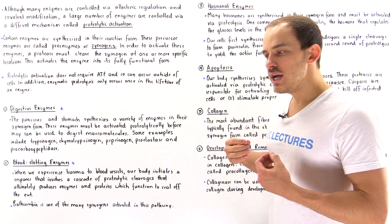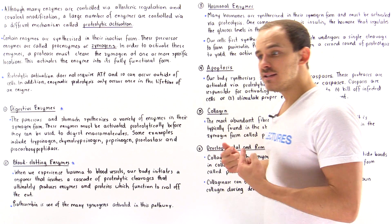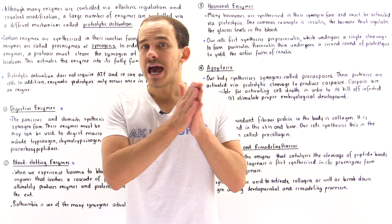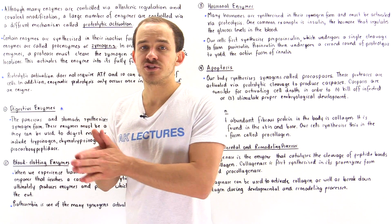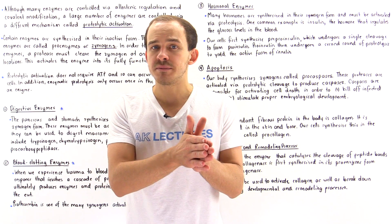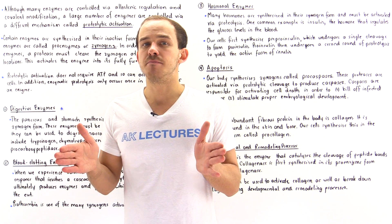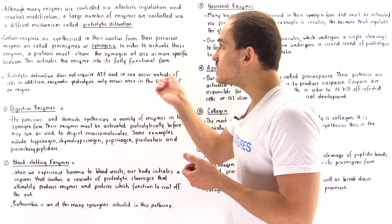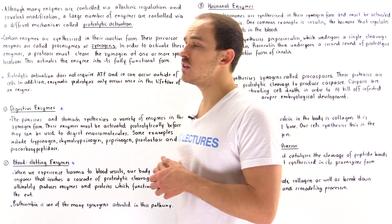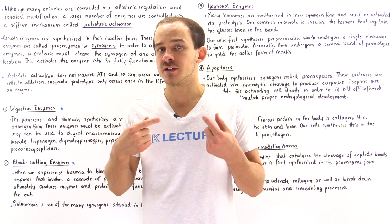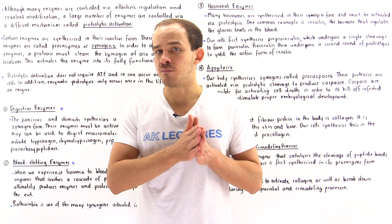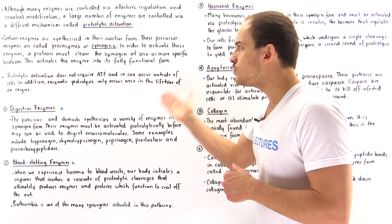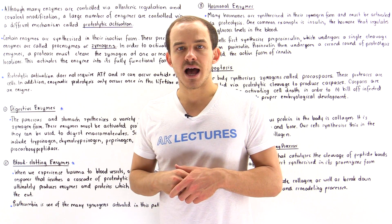To actually activate these enzymes we have to cleave them at specific peptide bonds. Sometimes we cleave one peptide bond, sometimes we cleave many peptide bonds, but the end result is the same. When our zymogen undergoes proteolytic activation — proteolytic cleavage by some type of protease — we basically produce the fully functional form of that enzyme.